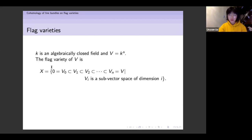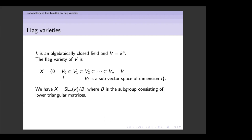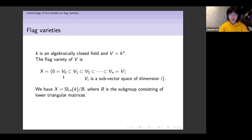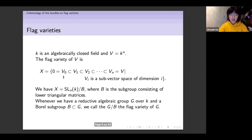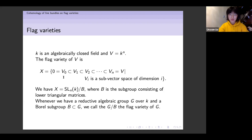More precisely, it is a closed subvariety of a product of Grassmannian varieties. We can also prove that this variety equals the quotient of SL_N by B, where B is the subgroup of SL_N consisting of lower triangular matrices. We call this the flag variety of SL_N. More generally, whenever we have a reductive algebraic group G and a Borel subgroup, we can equip the quotient space G/B with a natural structure of a projective variety, and we call this the flag variety of G.